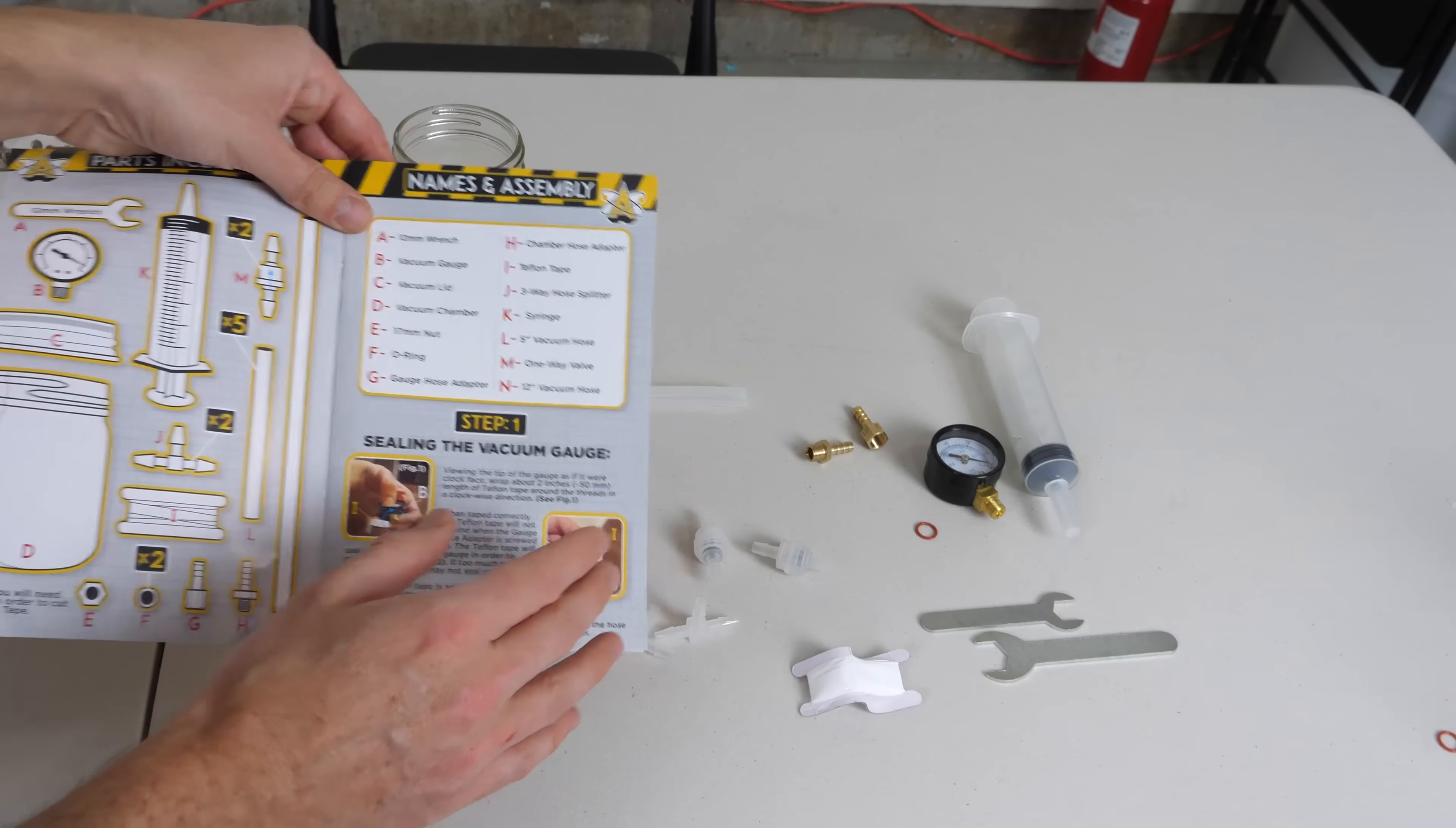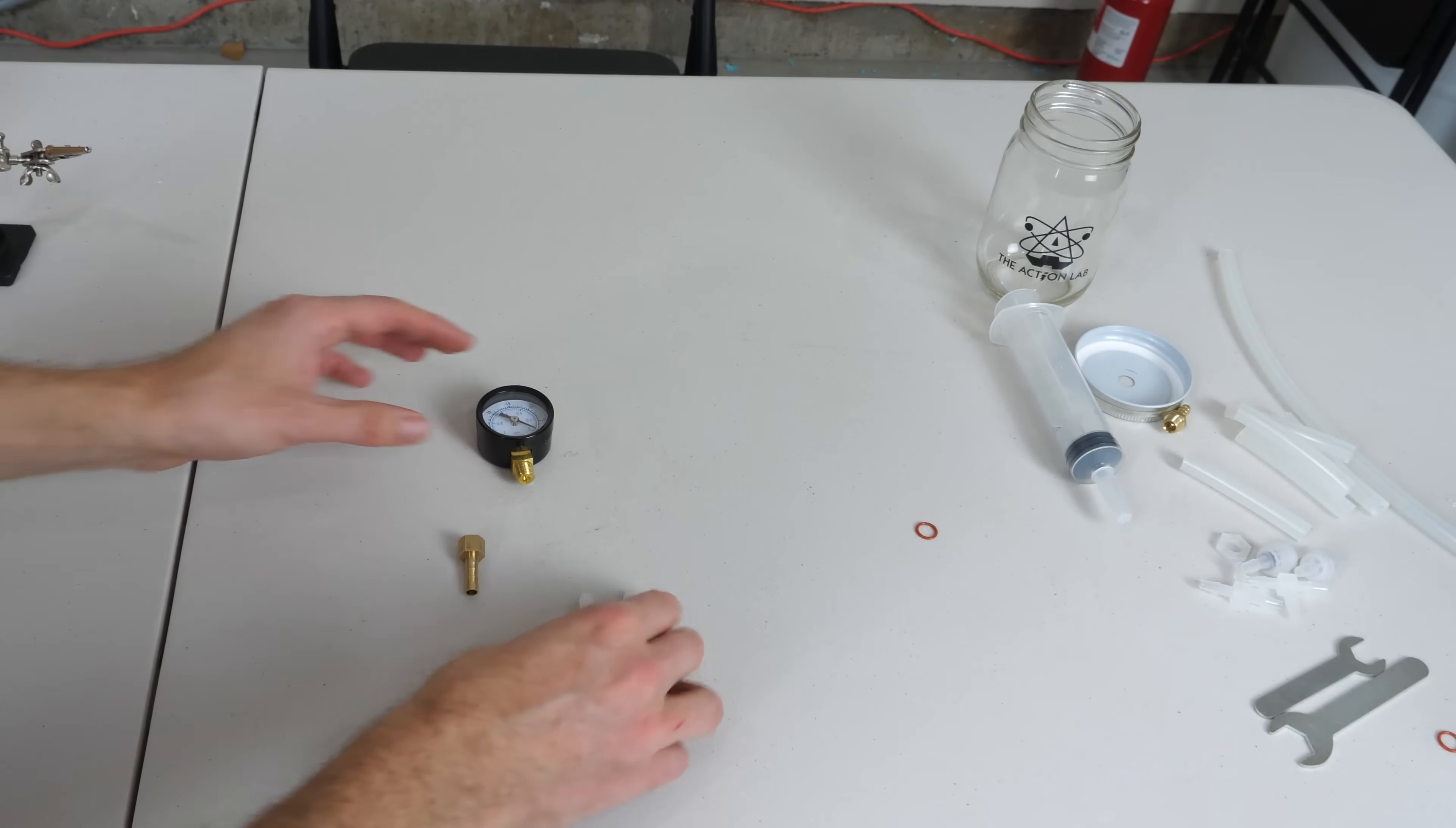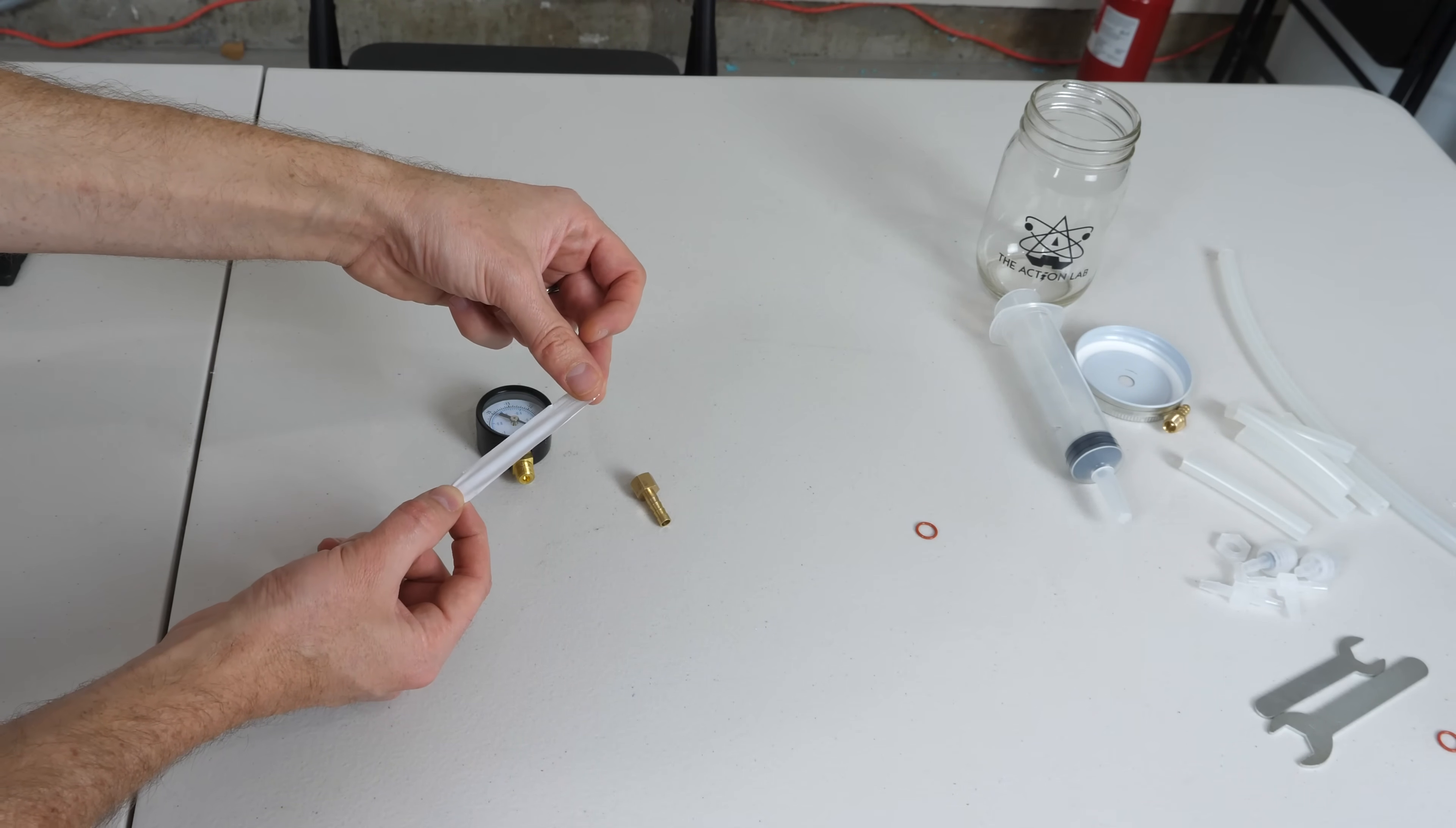Now the first step is to seal your vacuum gauge. In order to do this, you need your Teflon tape, your hose adapter, and your vacuum gauge. This tape is very fragile. It's made of Teflon and it's meant to seal vacuum or gas lines.